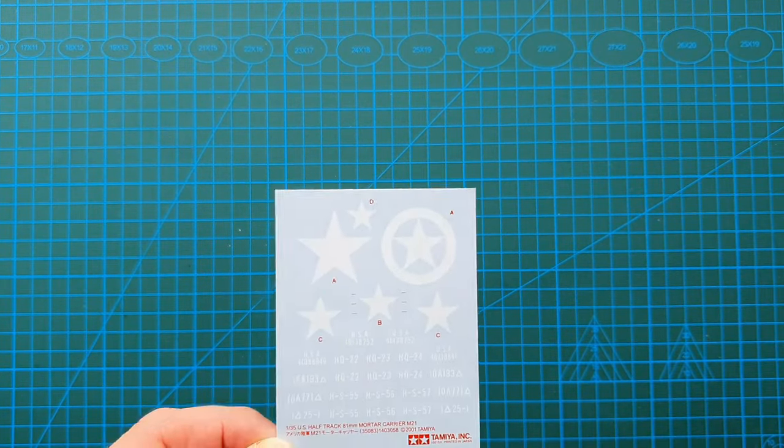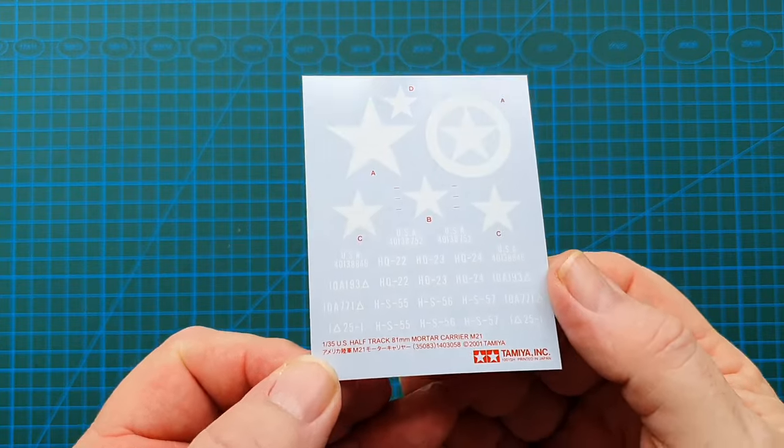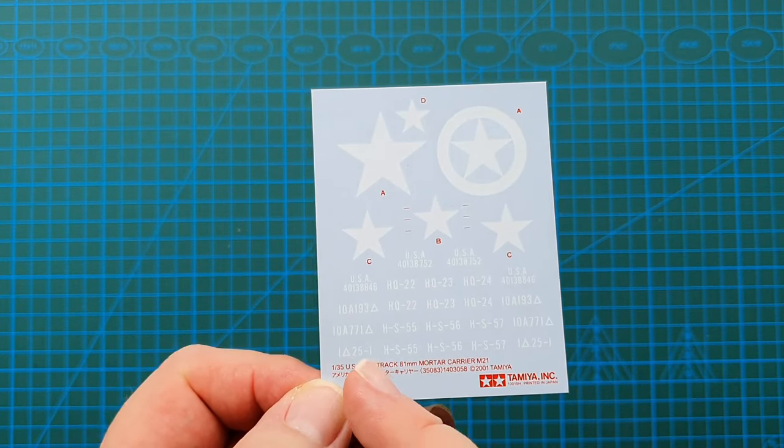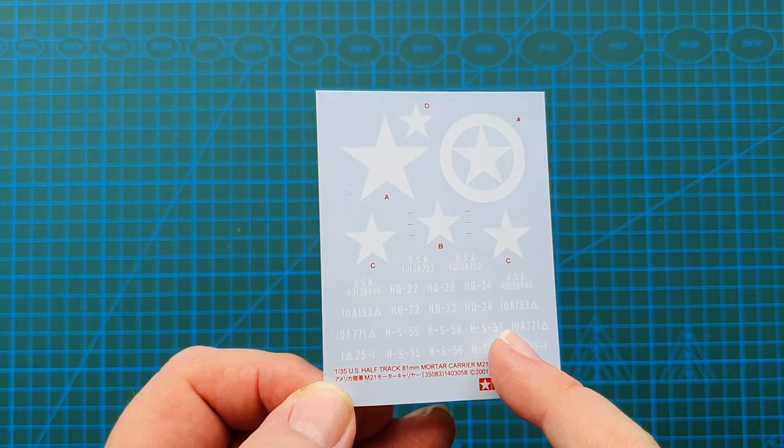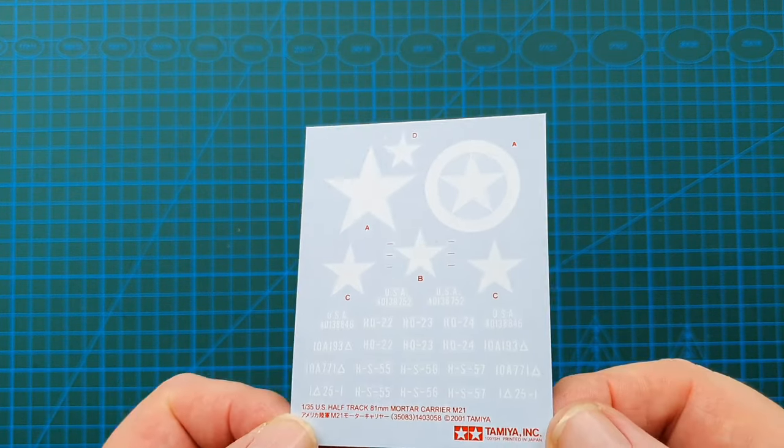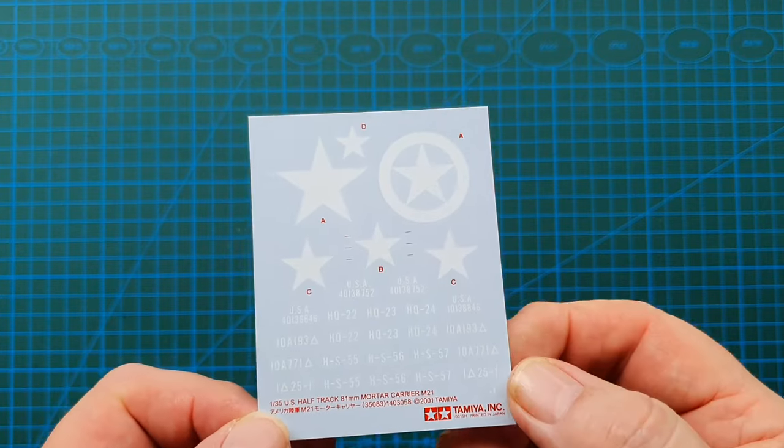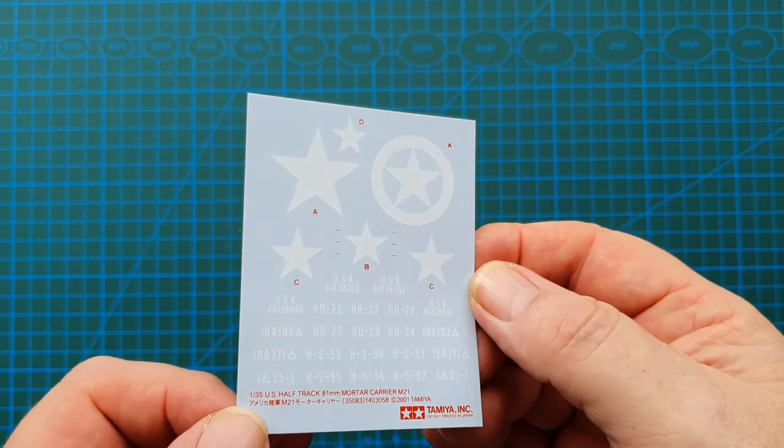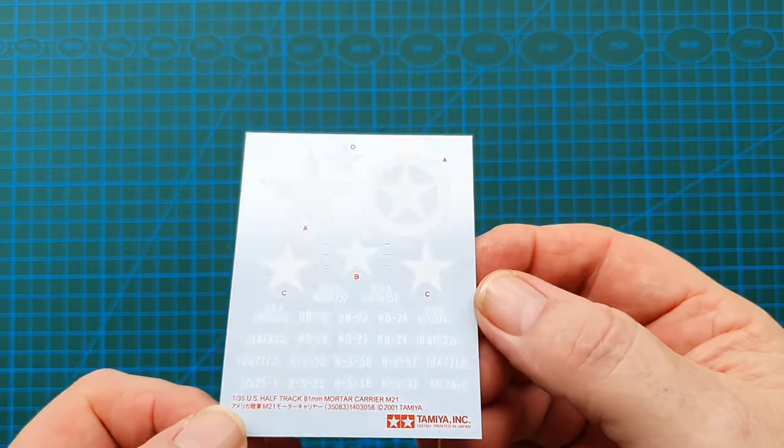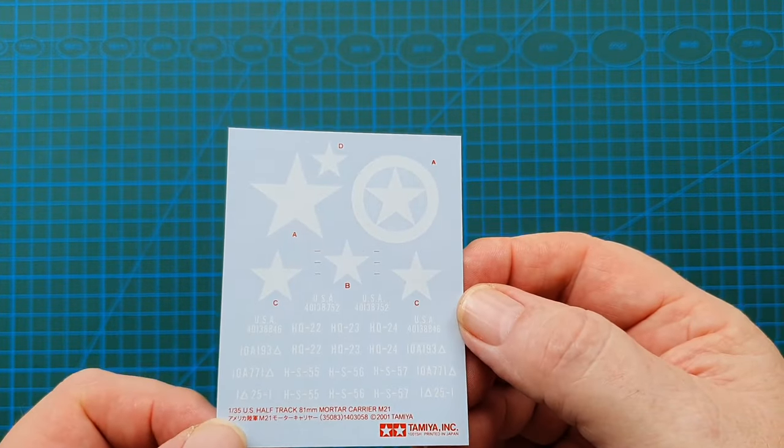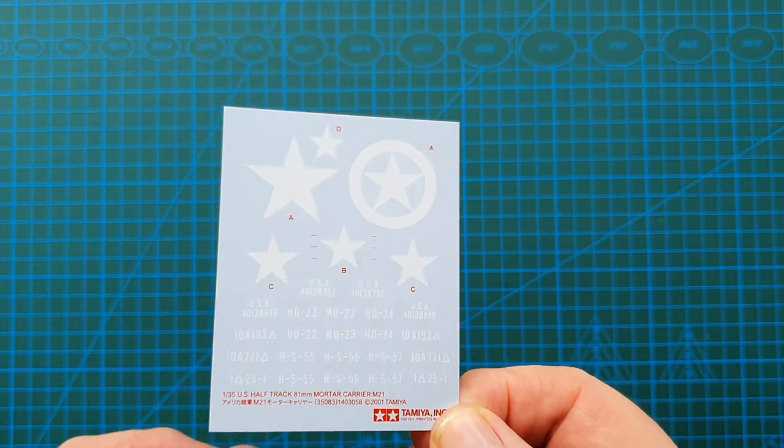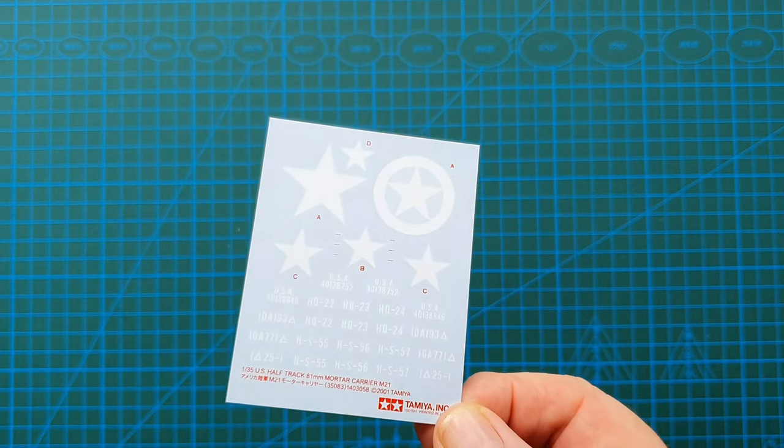So here's your decal sheet. Copyright 2001, and there's all your numbers for the vehicle and of course your white stars. Really a new print for these, even though it's copyrighted 2001, and very nicely done. I'll give you a shot of that, and then in a second we will have a look at the actual sprues.